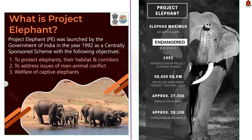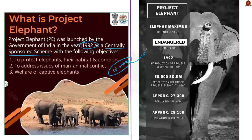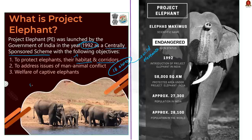Project Elephant is a centrally sponsored scheme launched in 1992, mainly implemented in 16 states and union territories that have wild elephants in free-ranging populations. Its main objectives are: to help states in the protection and maintenance of wild elephants; to ensure protection of elephant corridors and habitat; and to provide technical and financial help for census and training of field officials to mitigate man-elephant conflict. The Ministry of Environment, Forest and Climate Change provides the required financial and technical support to the states.